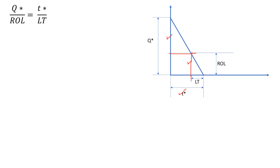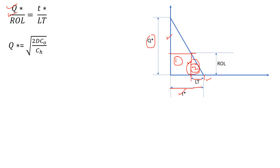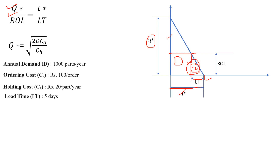We know that Q* (EOQ) = √(2D·C₀ / Cₕ). Substituting the given values D = 1000, C₀ = 100, and Cₕ = 20, we get Q* = 100 parts. The optimal order cycle time T* = Q* / D = 100 / 1000 = 1/10 year.